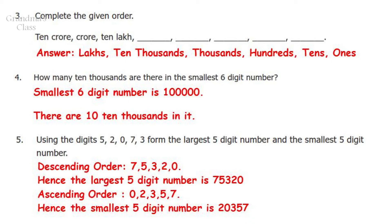Question 4: How many 10-thousands are there in the smallest 6-digit number? First, the smallest 6-digit number is 1,00,000. Question 5: Using the digits 5, 2, 0, 7, 3, form the largest 5-digit number and the smallest 5-digit number. The largest 5-digit number would be 75,320 and the smallest 5-digit number will be 20,357.